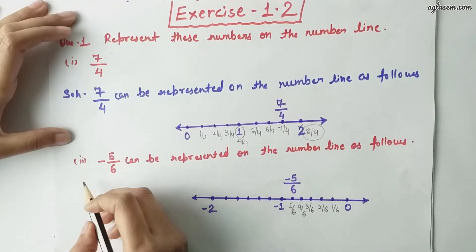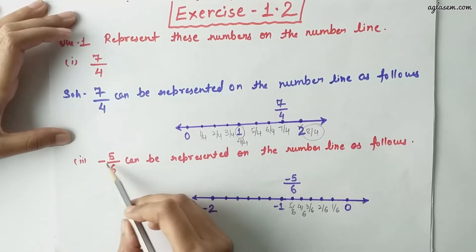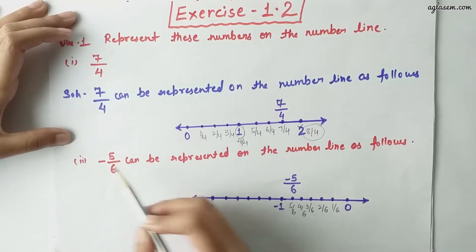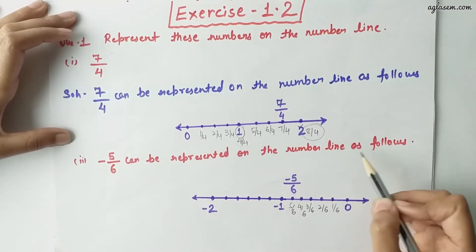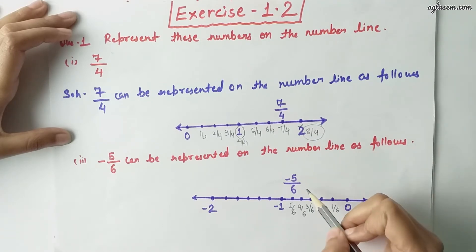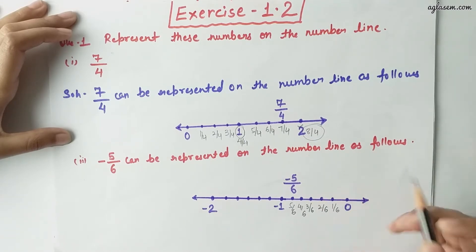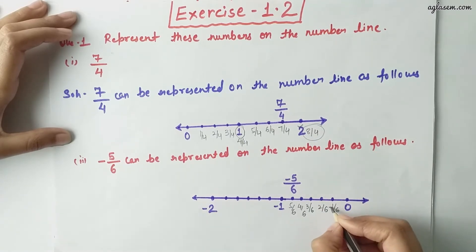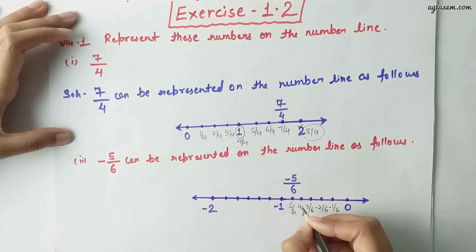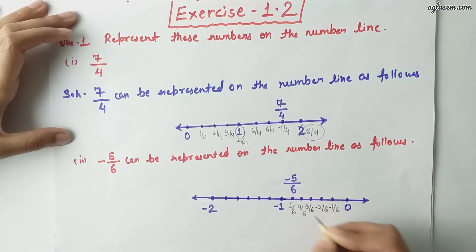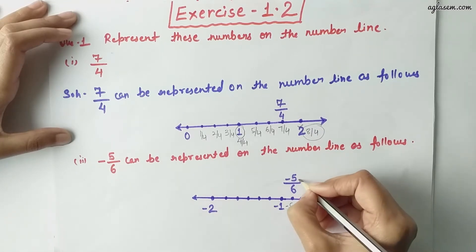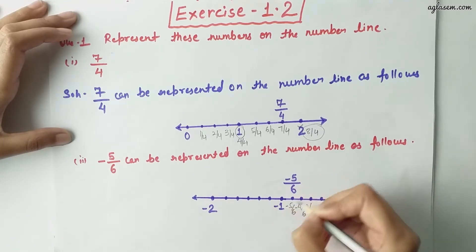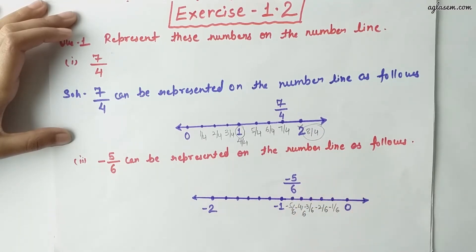The second part of the same question: minus 5 by 6 can be represented on the number line as follows. Write minus 1 by 6, minus 2 by 6, minus 3 by 6, minus 4 by 6, and minus 5 by 6. So minus 5 by 6 lies here on the number line.